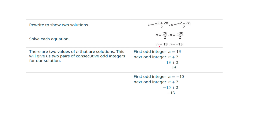It's just a quadratic equation, and it tidies up to two solutions. It turns out there are two different ways this can be done. It could happen if your first number is 13, then that makes the second 15. It also can happen if your first number is negative 15 — if you have negative 15, isn't the next odd integer negative 13? So there are two ways this can occur.